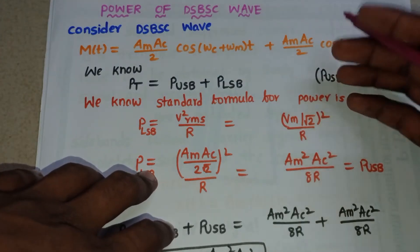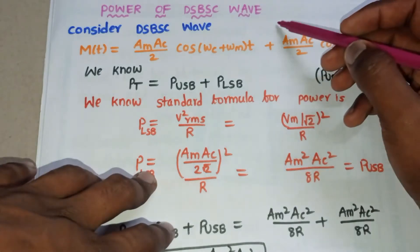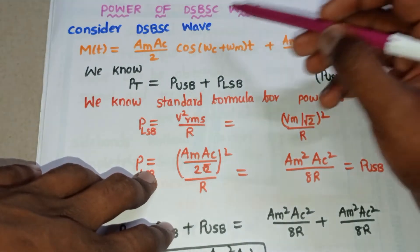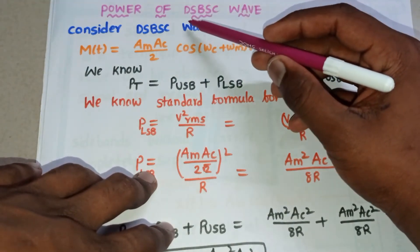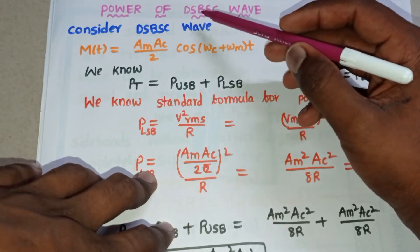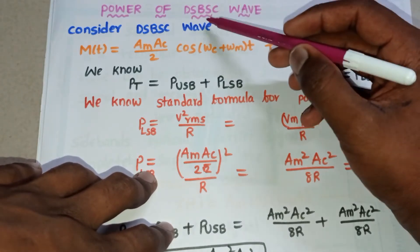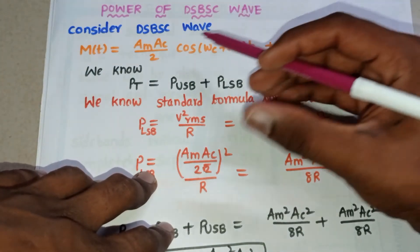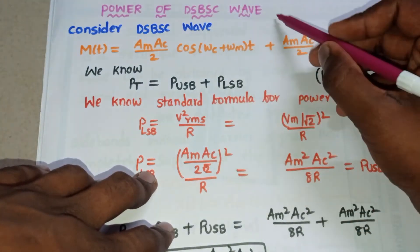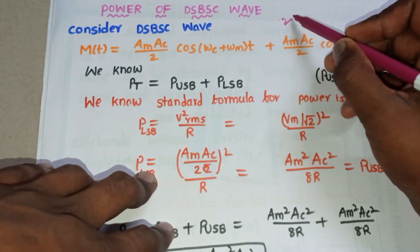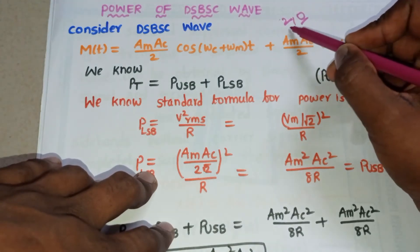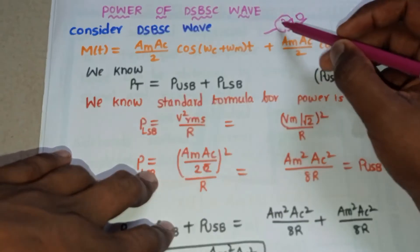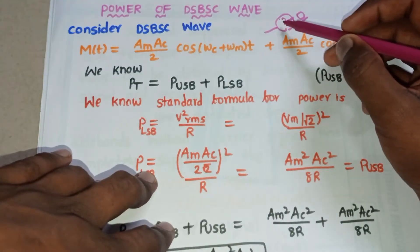Here we are going to find the power of a DSBSC wave. DSBSC stands for Double Sideband Suppressed Carrier. It has two sidebands, and the carrier is suppressed, meaning there is no carrier. So the power of the DSBSC wave is nothing but the power of these two sidebands.